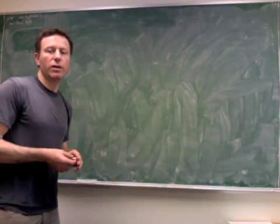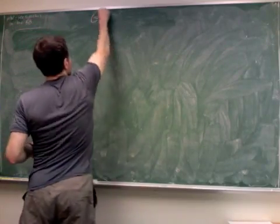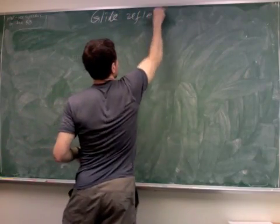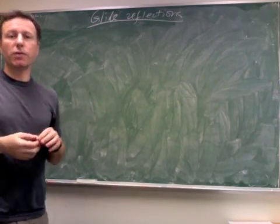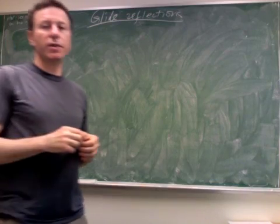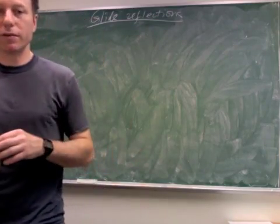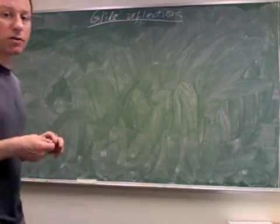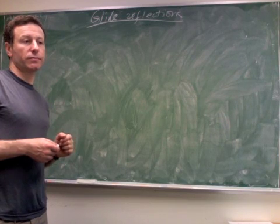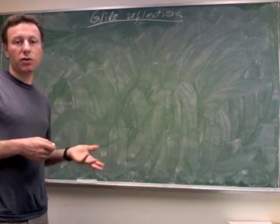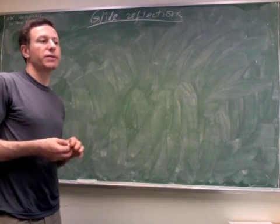Hi everyone, and welcome to today's podcast. We'll talk about glide reflections. We know so far that any isometry is a product of up to three reflections, and we basically finished finding out everything there is to know about the products of up to two reflections. So we have either single reflections, which are odd isometries, or even isometries, which are either rotations or translations.